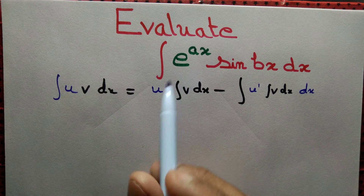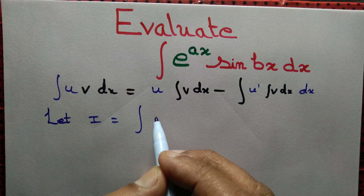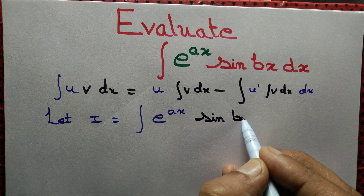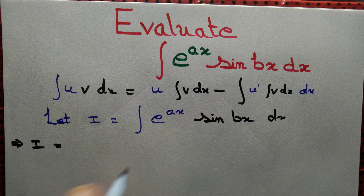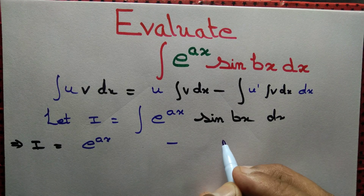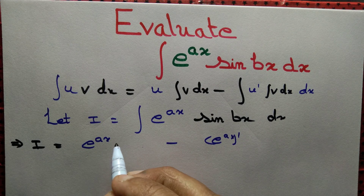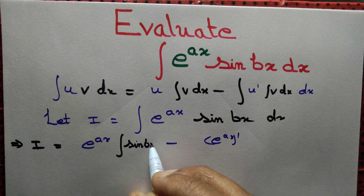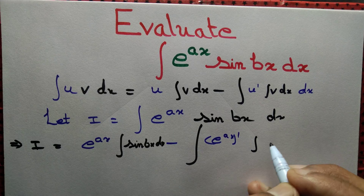If the first function is e to the power x, let's start by writing: let i equal to the integral of e to the power x into sin bx dx. This implies i equals the first function e to the power x into the integral of the second function, minus e to the power x derivative. Once again, the first function is e to the power x into the integral of the second function. The second function is sin bx dx, minus the integral of the derivative of the first function into the integral of the second function.